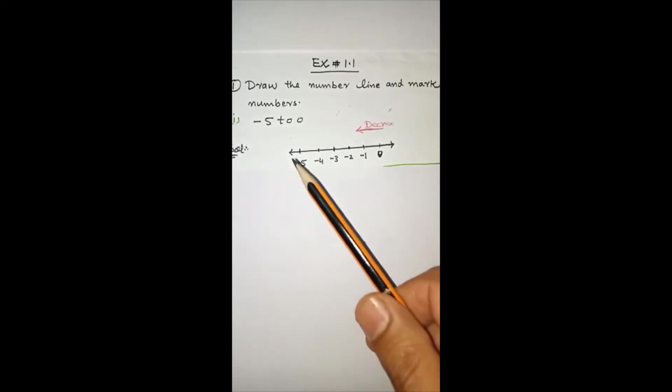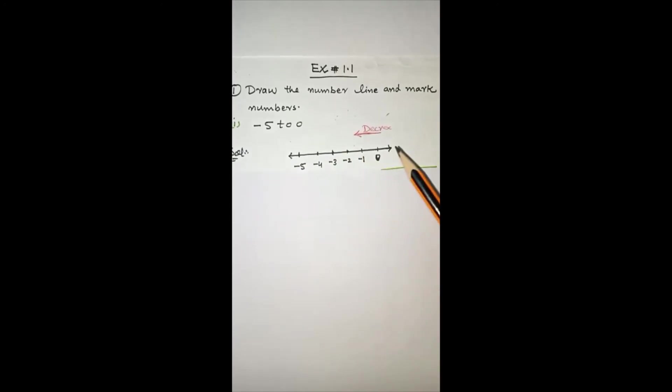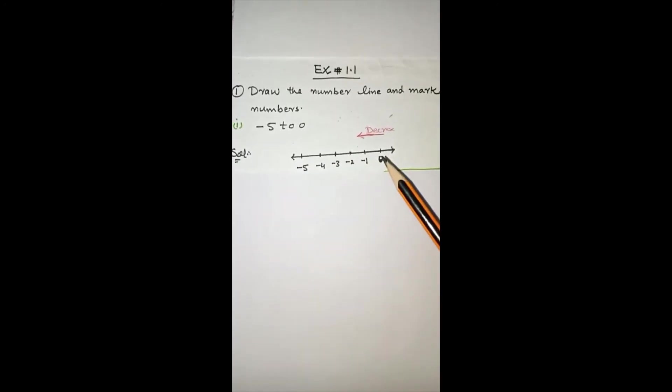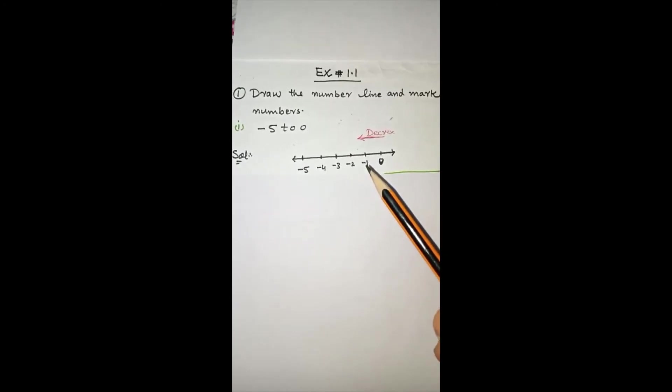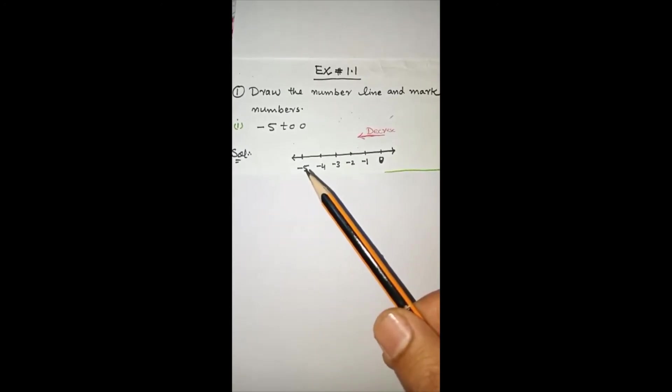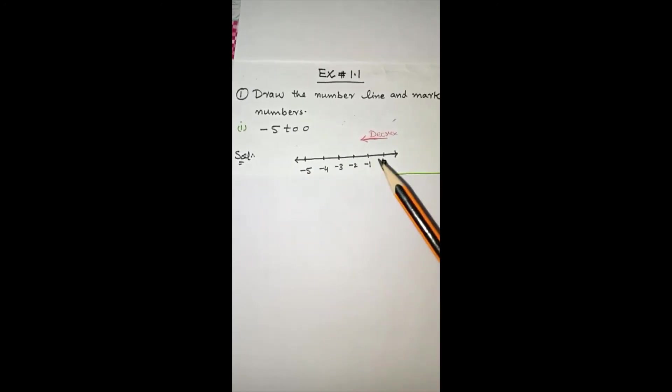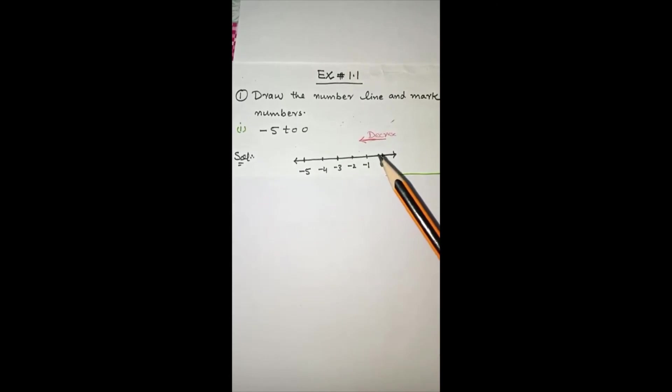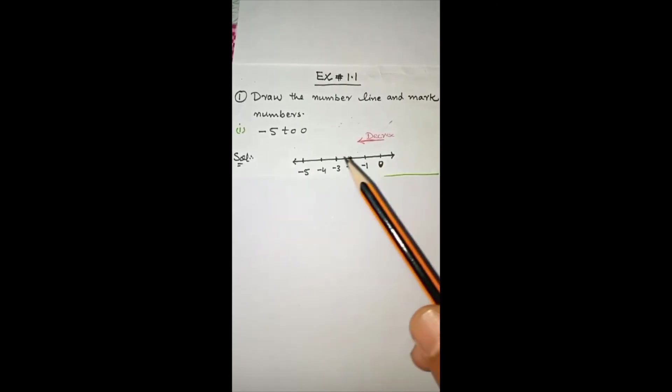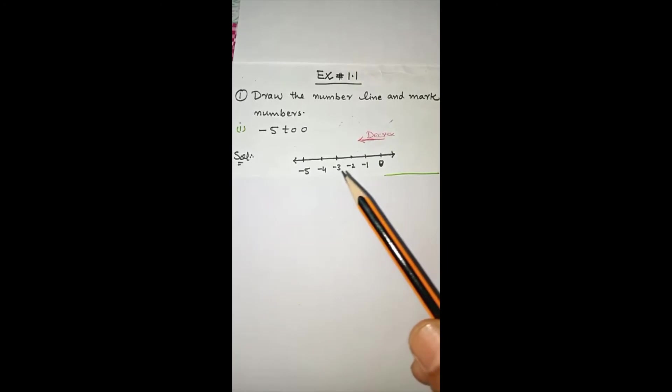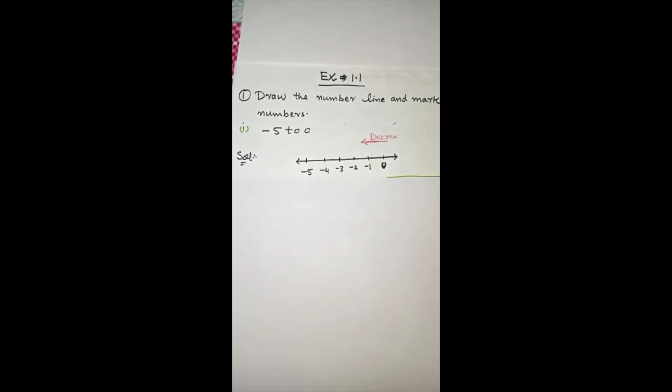Now we will first draw the number line. On the right side we mark zero, and then on the left side: minus 1, minus 2, minus 3, minus 4, minus 5. This shows that on the left side of zero, numbers decrease. Now that is the solution.